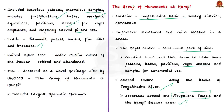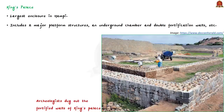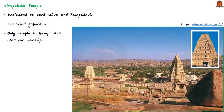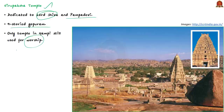Let us see some important structures helpful for your examination. First, the King's Palace — it is the largest enclosure in Hampi and includes two major platform structures, an underground chamber, and double fortification walls. Second, the Virupaksha Temple, dedicated to Lord Shiva and his companion Pampa Devi. The temple has a nine-storeyed gopuram and is the only temple in Hampi still used for worship. We already learned what a gopuram looks like, and this temple has a nine-storeyed one.